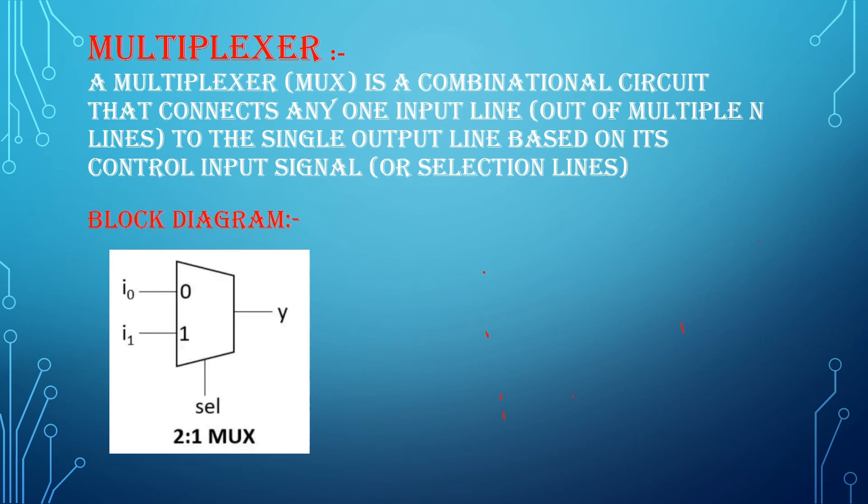Now let's draw the truth table. So s is the selection input and y is the output. Suppose if s is equal to 0, I0 is connected to y.